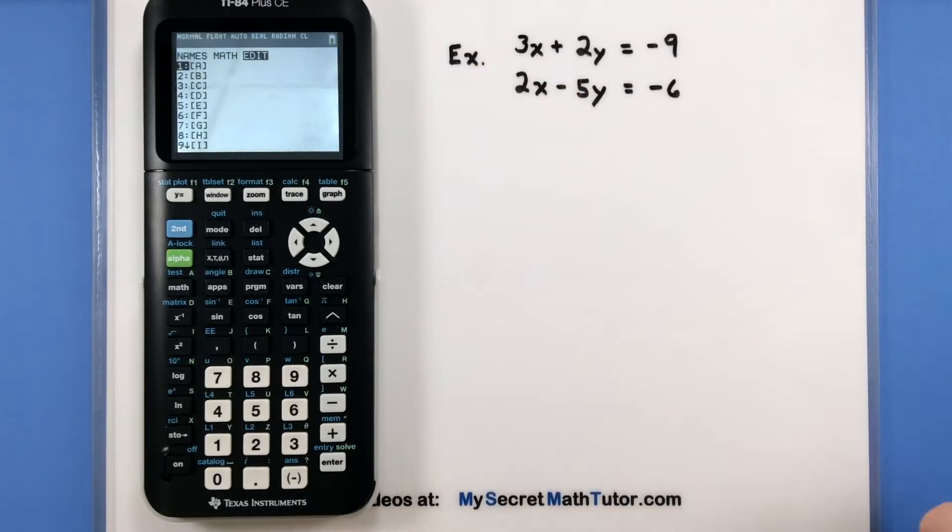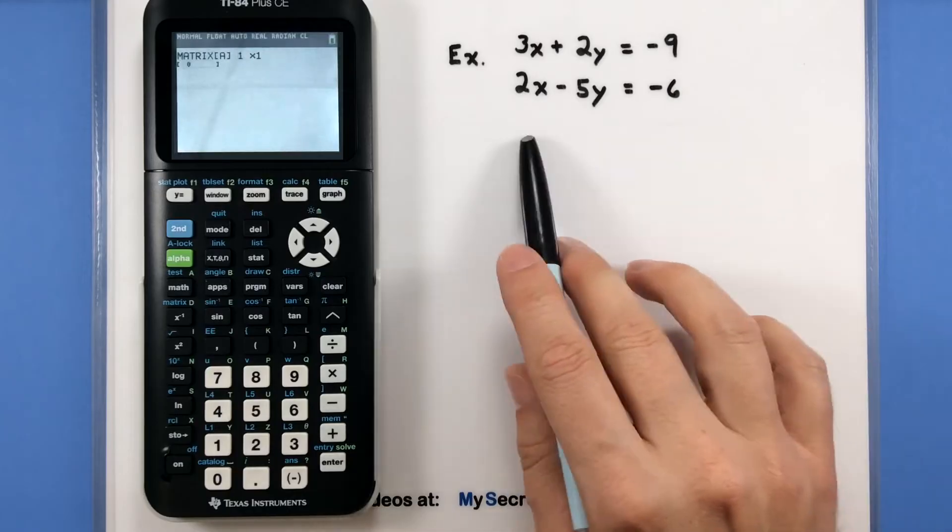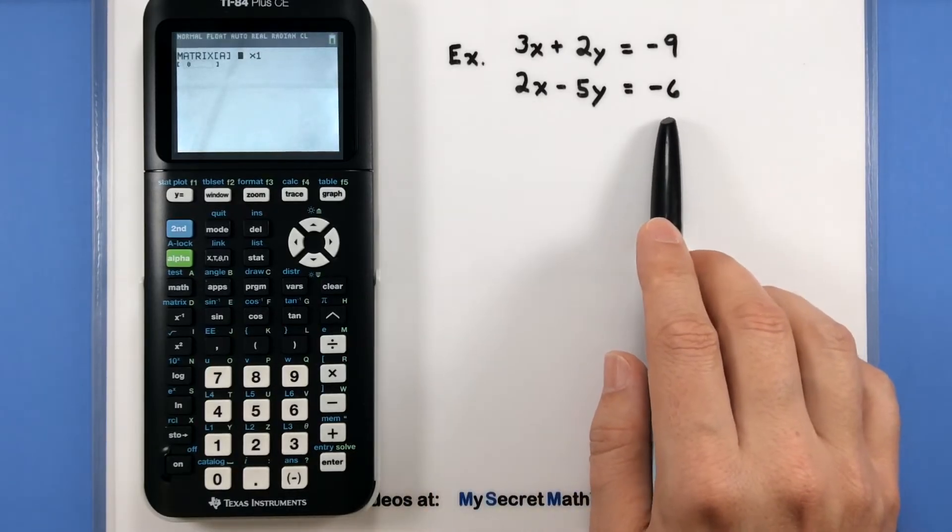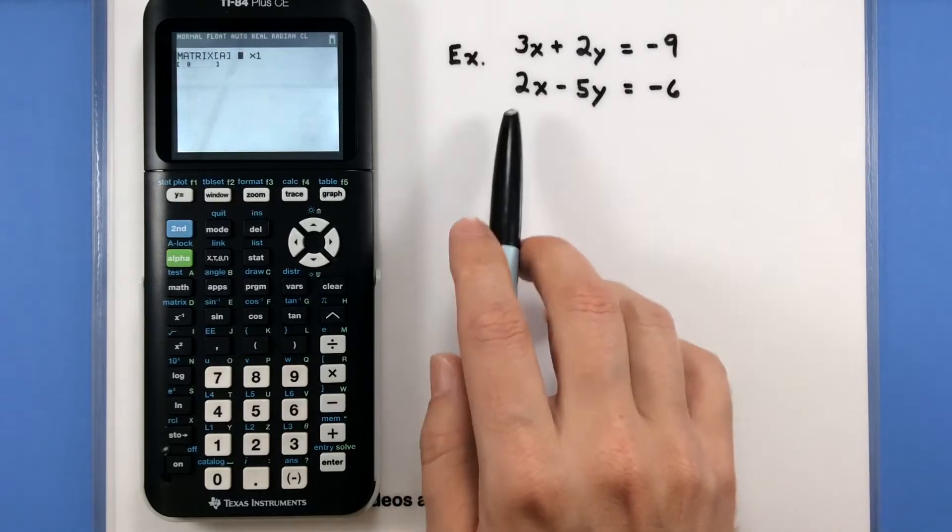We'll select the first matrix in our list. You may already have something stored there, maybe not, doesn't matter. Press enter, and now we can go ahead and start entering in the dimensions of our matrix. This will be the number of rows and columns, including our coefficients on the end. So I have two rows.